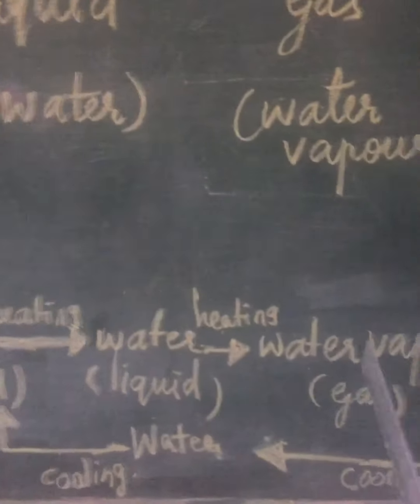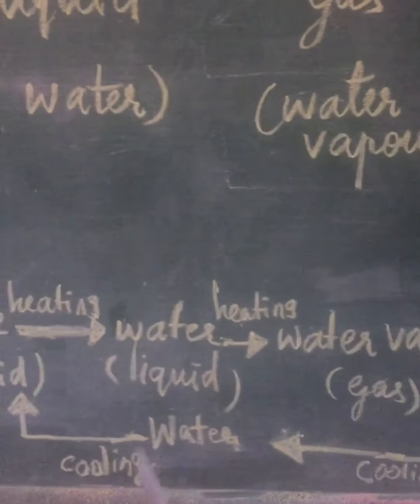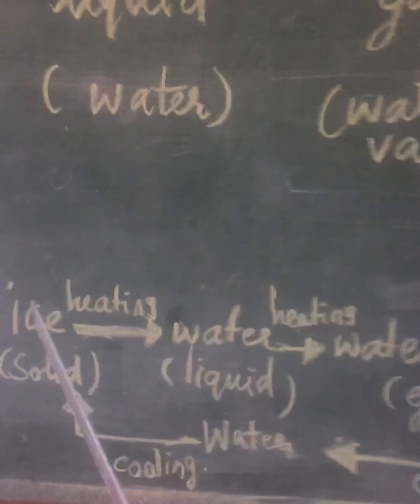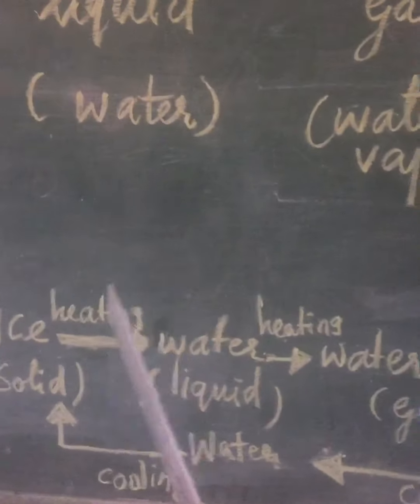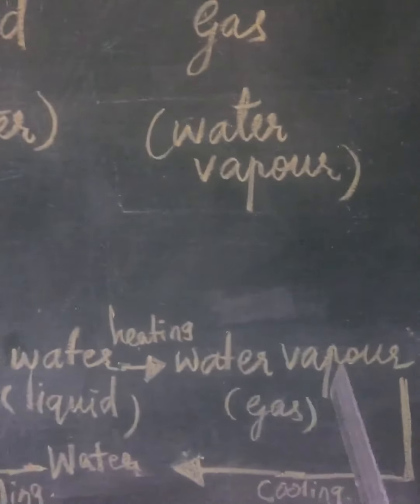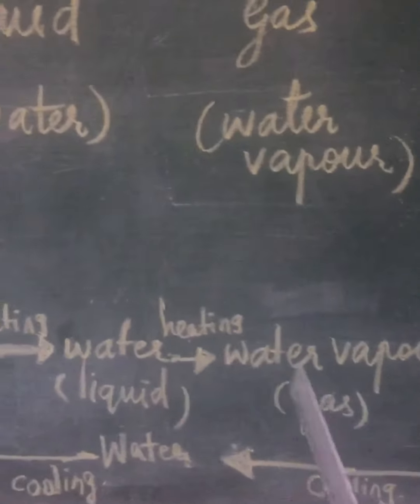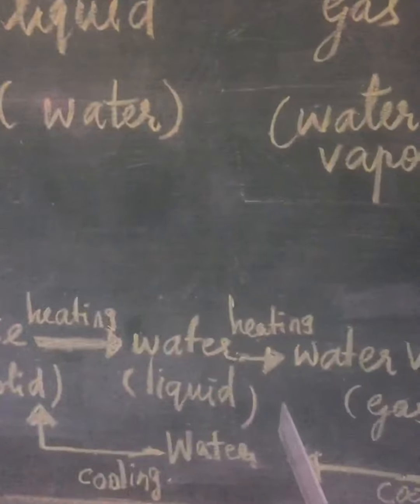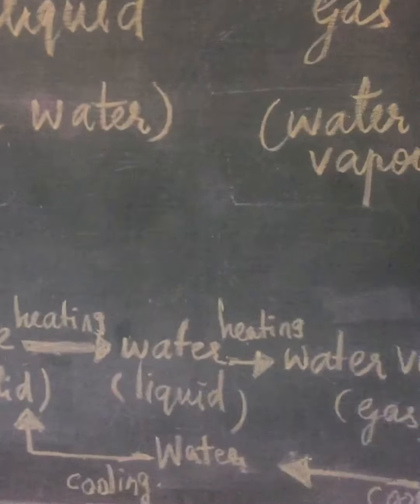So water can exist in 3 forms: solid form, liquid form, and gaseous form. Due to temperature changes, water can be changed from one form into another.